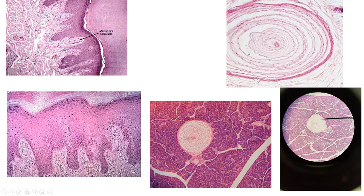The Pacinian corpuscle looks like concentric rings — it might look like an onion that's been cut in half. Meissner corpuscles are found in the dermal papillae. Here's one, and here's another good one, and here's another one.